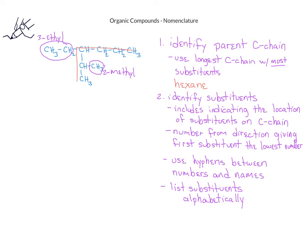Putting all these pieces together, the name of this compound is 3-ethyl-2-methylhexane, with no spaces or hyphens between the substituent name and the parent chain name.